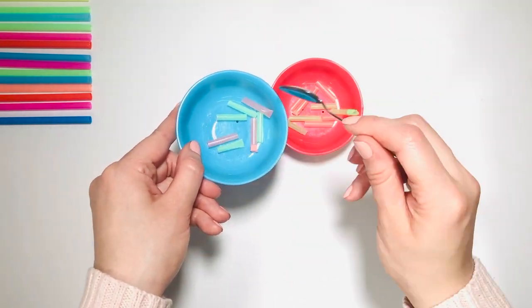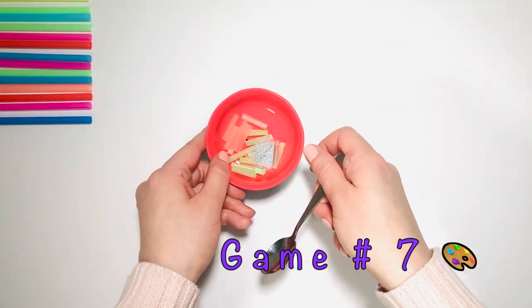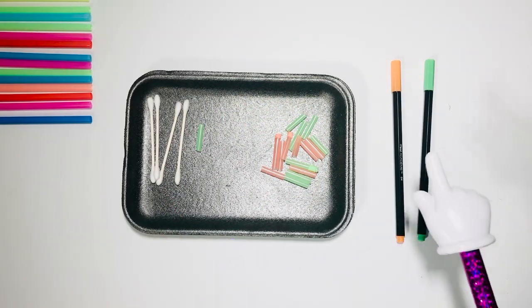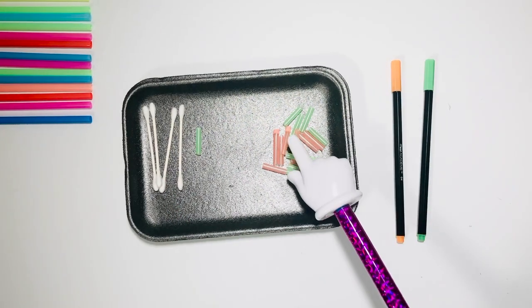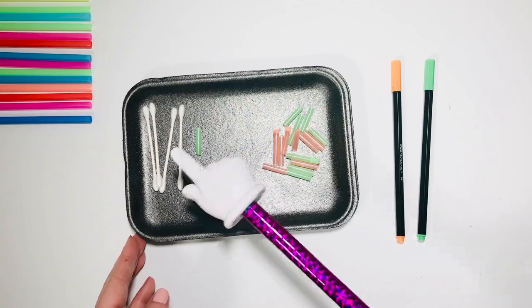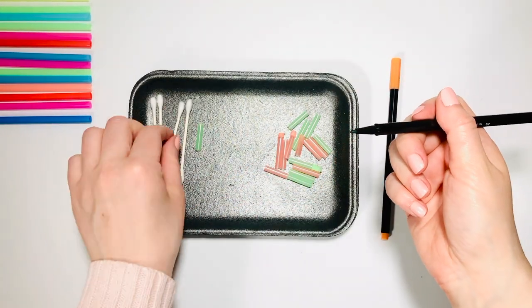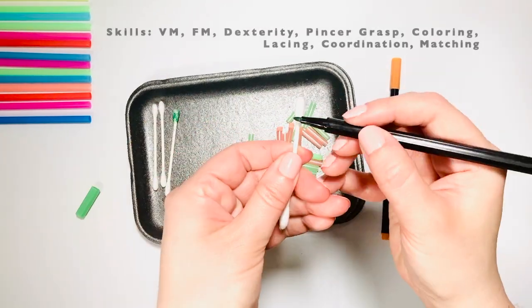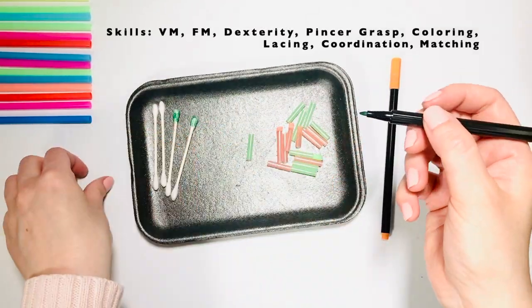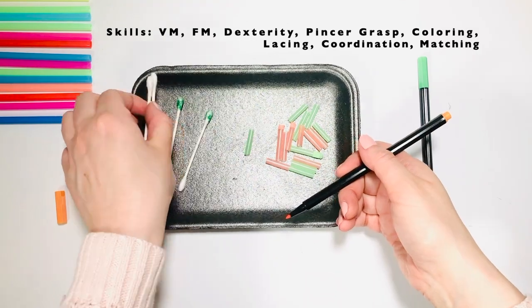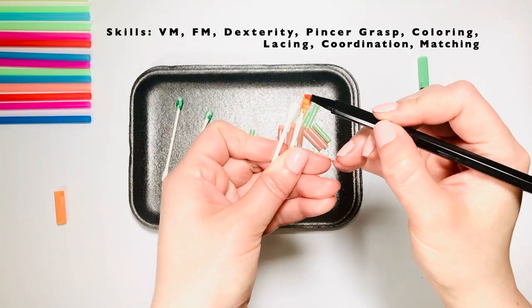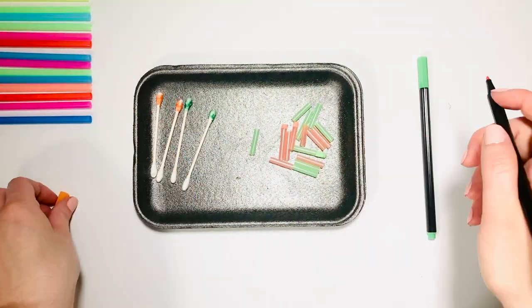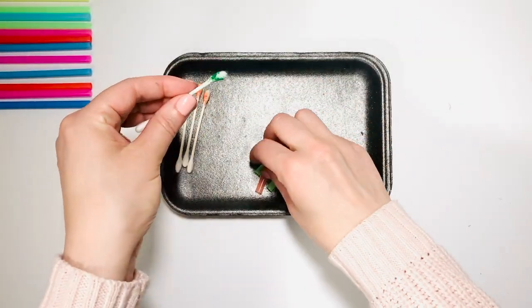For game number seven, we're going to do some coloring and lacing. You need two markers to match the color of your straw and four q-tips. Color two q-tips with green and two of them make orange. Now match and lace.